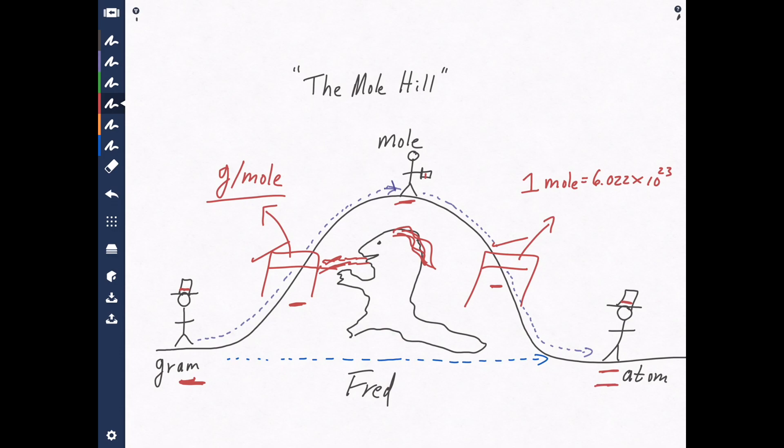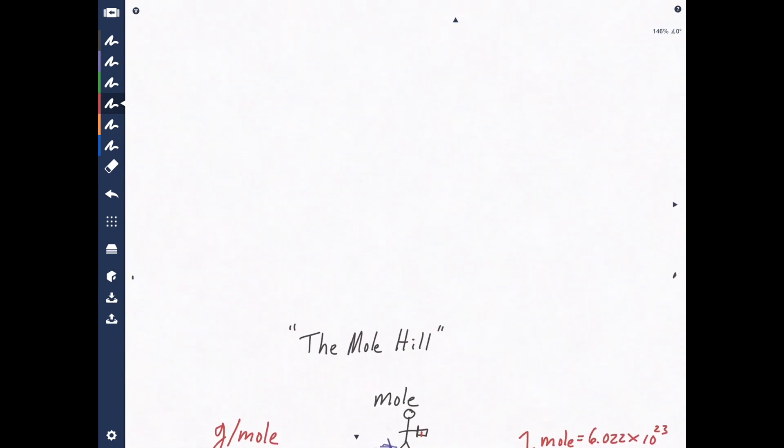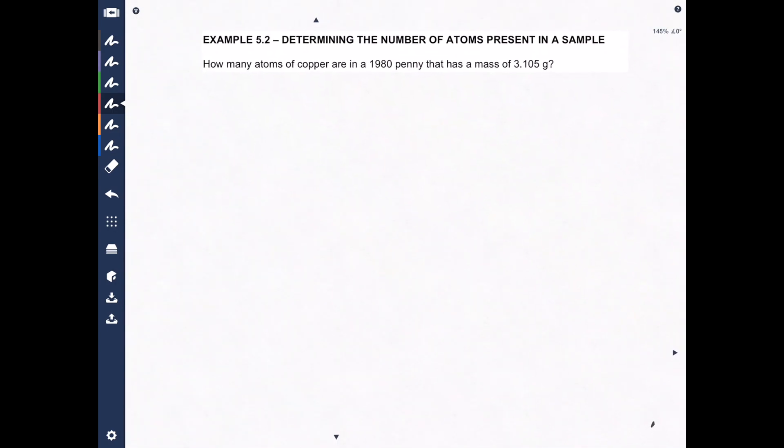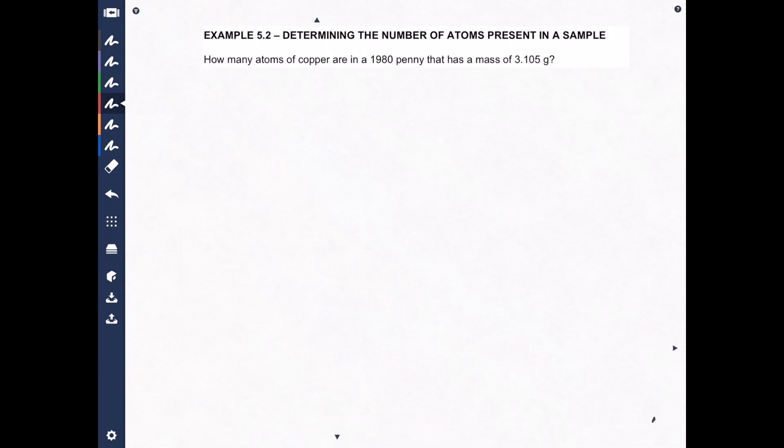So we start with grams, we go to moles, we go to atoms. That's how we do it. Okay, so let's go up here. I've written the question up here. Determine the number of atoms present in a sample. How many atoms of copper are in a 1980 penny that has a mass of 3.105 grams?